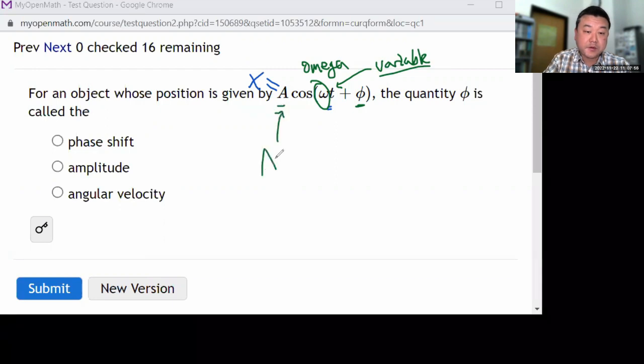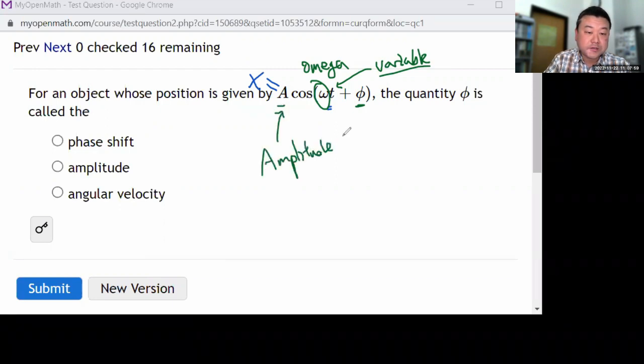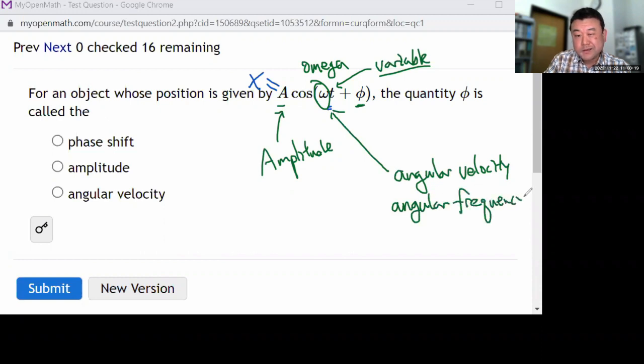This A is called amplitude. So in your multiple choice, it's not one of your answers. And this omega, I will give you two alternate names for it. Sometimes you will hear it called angular velocity, and that's the choice you see there. Sometimes you will hear it called angular frequency.